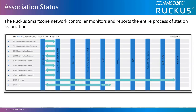The Ruckus SmartZone controller provides a utility that allows administrators to monitor all phases of client association, which can be very helpful in troubleshooting scenarios. In this output, you can observe the client going through the phases of authentication, association, and the four-way handshake. It then confirms the client's ability to access the medium by displaying a DHCP request and a received response.